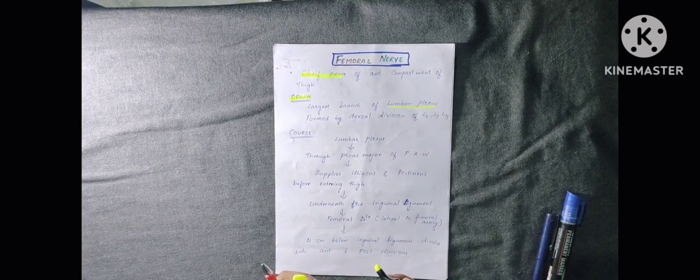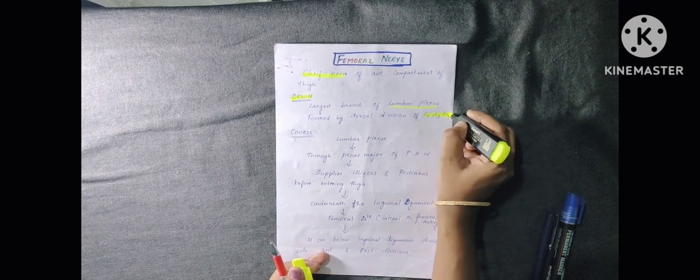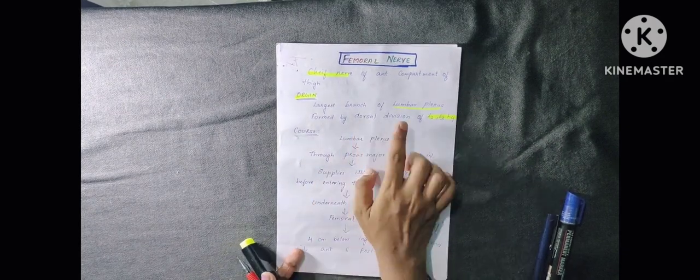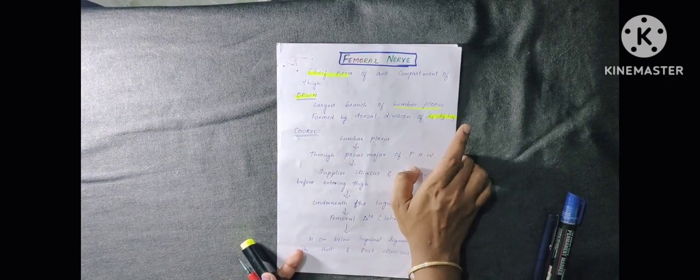The femoral nerve is formed by the dorsal division of L2, L3, and L4.